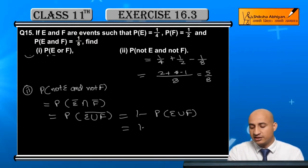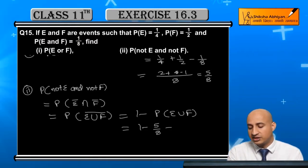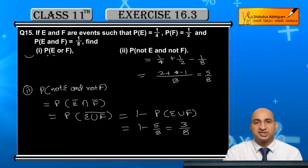We already know P(E union F) = 5/8. So the answer is 1 - 5/8 = 3/8.